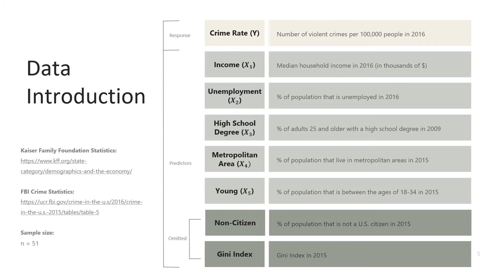The response variable Y is the crime rate, which is measured as the number of violent crimes per 100,000 people. Measuring this crime rate rather than the number of crimes is important because it standardizes the data and corrects for the different population sizes in each state.